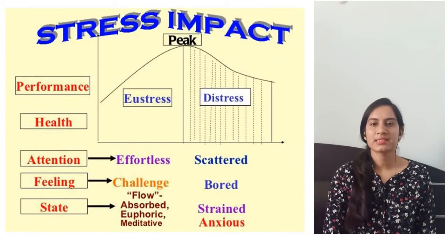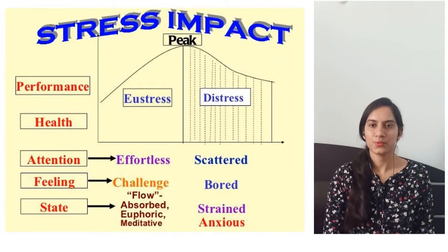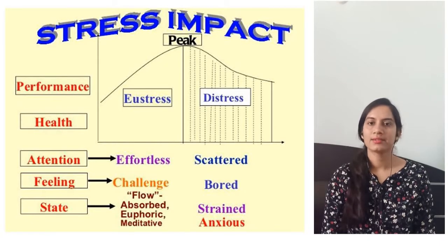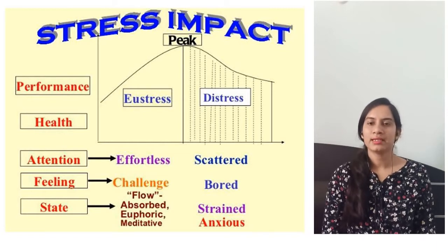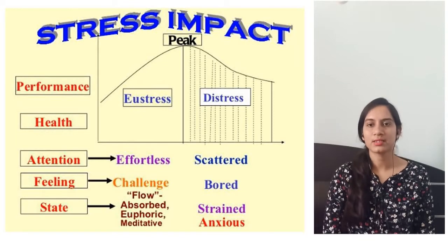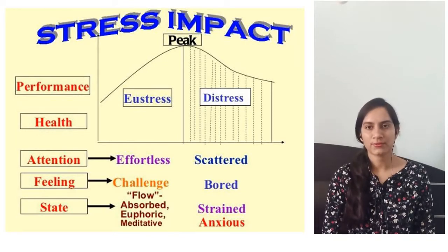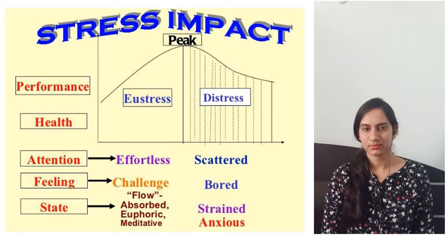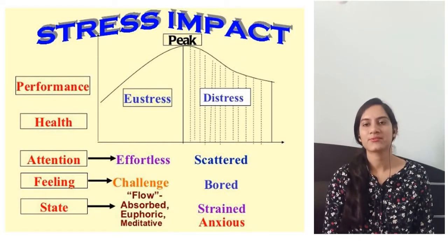Looking at the stress impact diagram, eustress and distress are clearly indicated on a performance graph. In the eustress condition, performance increases and the health of the individual is good — the individual attains peak performance. When distress comes into the situation, there is degeneration of performance. Health slowly deteriorates and performance comes down. You will feel fatigue, anxiety, and disappointment. These are the conditions of distress.